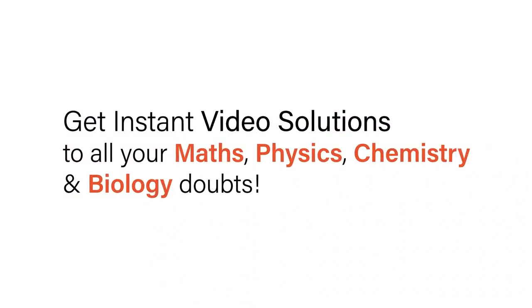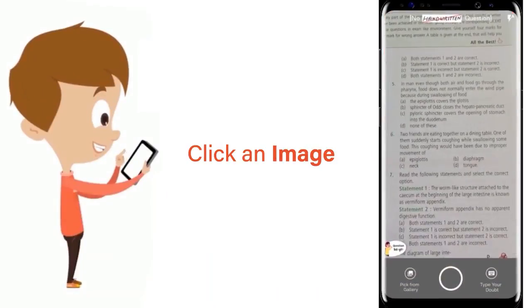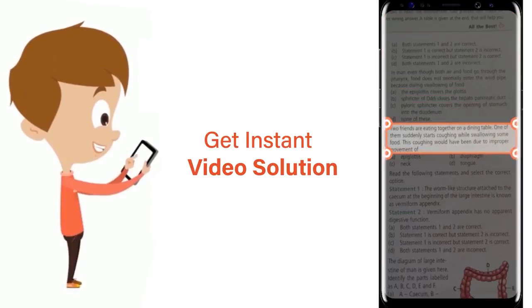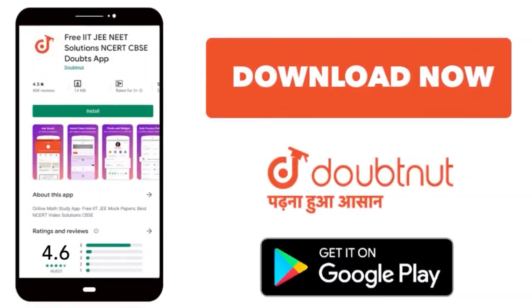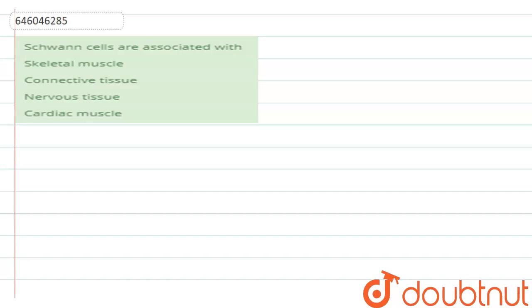With Doubtnet, get instant video solutions to all your math, physics, chemistry, and biology doubts. Just click the image of the question, crop the question, and get instant video solution. Download Doubtnet app today. Hello students, the question says: Schwann cells are associated with...